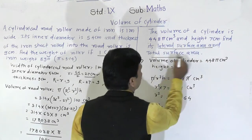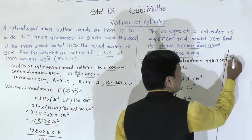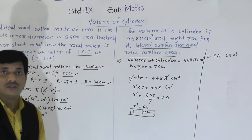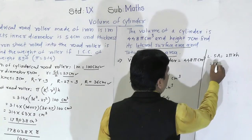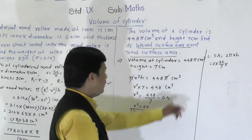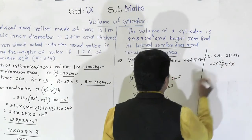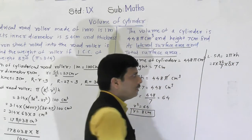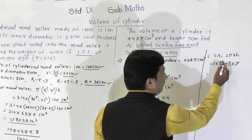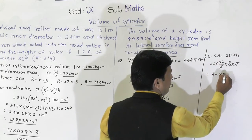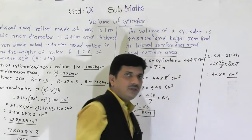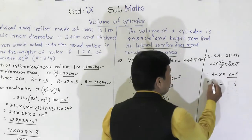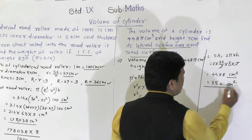Now we have to find two things: the lateral surface area (LSA) and the total surface area (TSA). The lateral surface area equals 2πrh. That is 2 × (22/7) × 8 × 7. The 7s cancel, giving 2 × 22 × 8 = 44 × 8 = 352 square centimeters. So the lateral surface area is 352 cm².